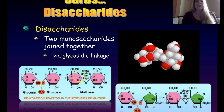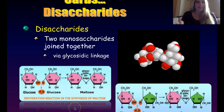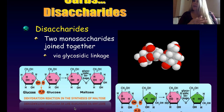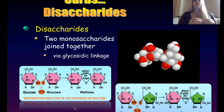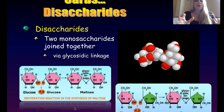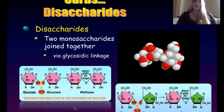We get a bond, and that gives us maltose and sucrose — both are disaccharides. As a side note, if you have three to a few monosaccharides joined together, those are called oligosaccharides, but we're going to focus on disaccharides right now.